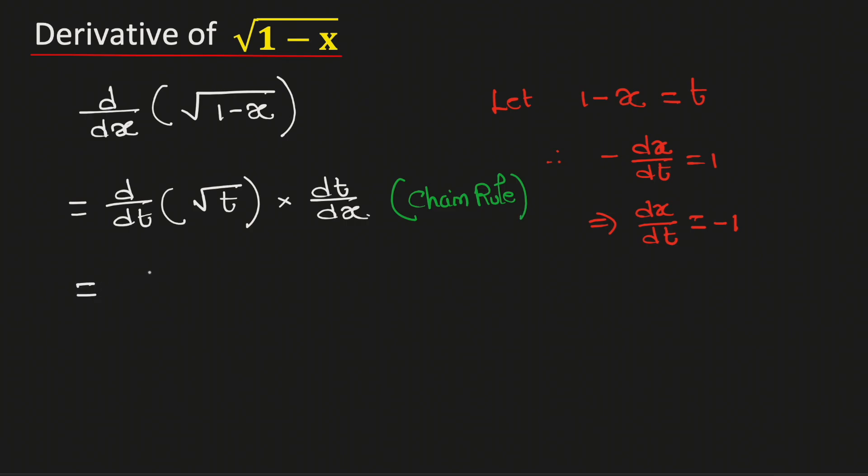Now we know that square root of t can be written as t power half. And dt dx is negative 1. Now to find this derivative, we will use the power rule of derivatives, which is given here.